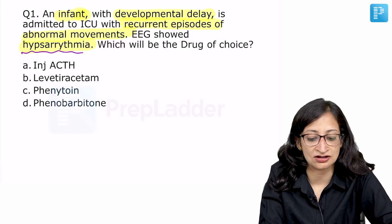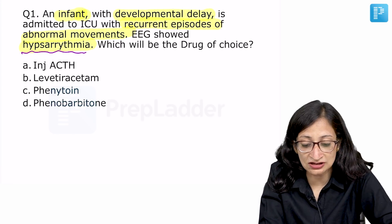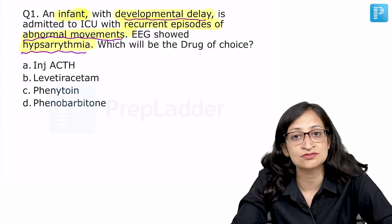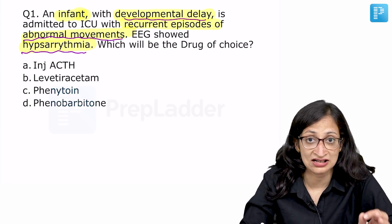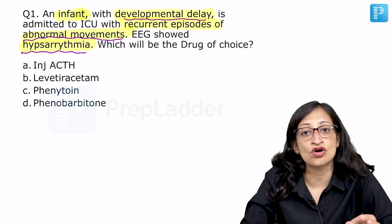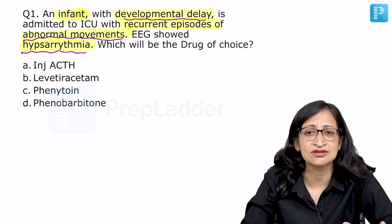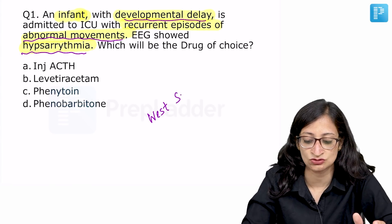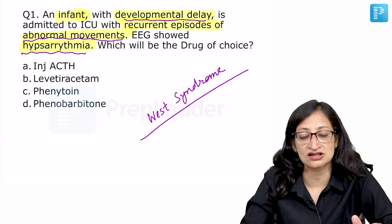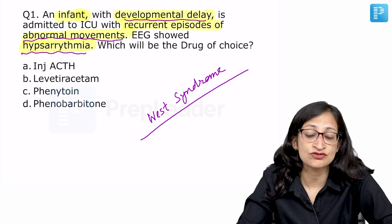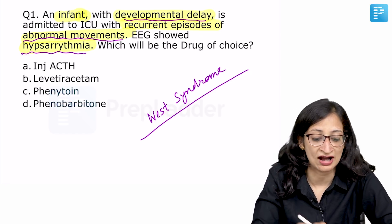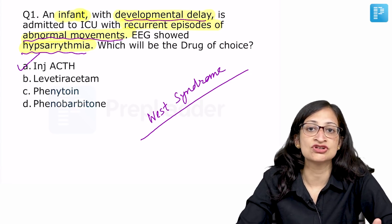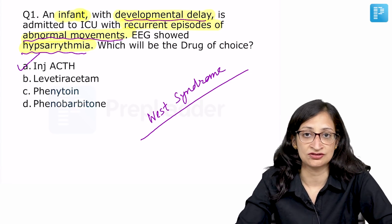What you are getting here is hypsarrhythmia pattern on EEG, developmental delay and some abnormal movements which are infantile spasms — the triad of infantile spasms. The diagnosis here is West syndrome, and the drug of choice for West syndrome is injection ACTH or adrenocorticotrophic hormone. The drug of choice for infantile spasms in a child with tuberous sclerosis is vigabatrin.